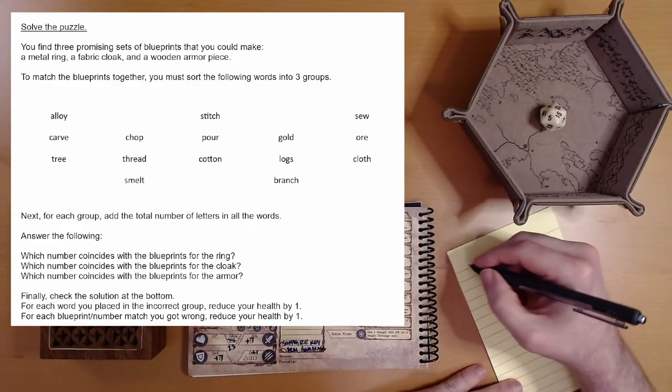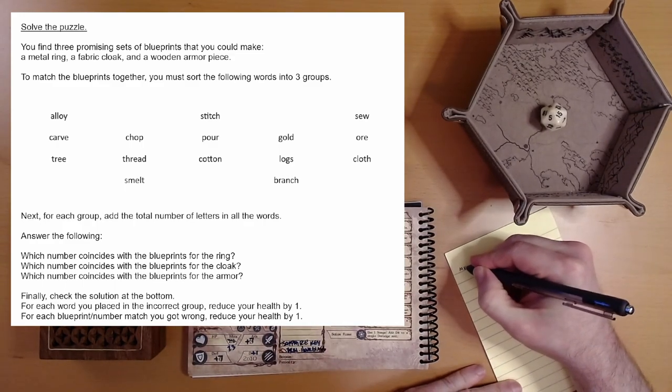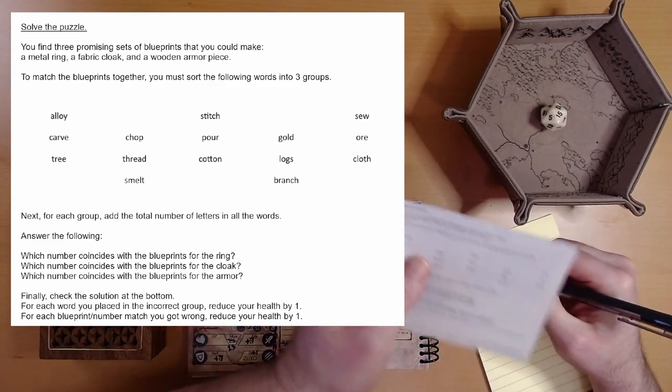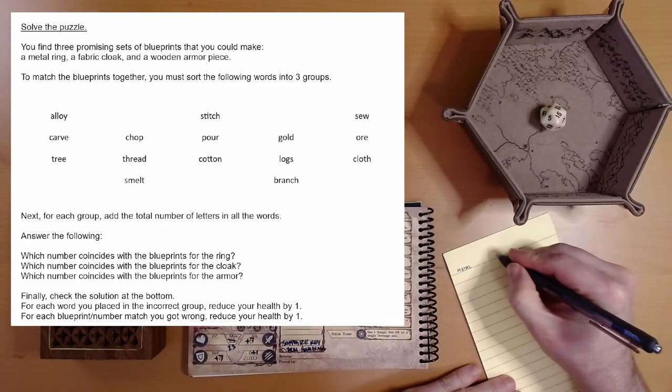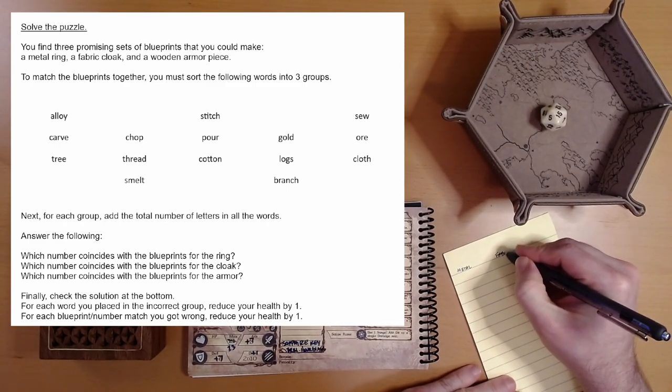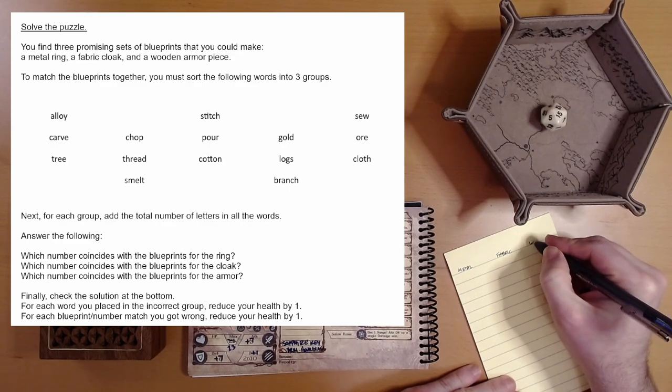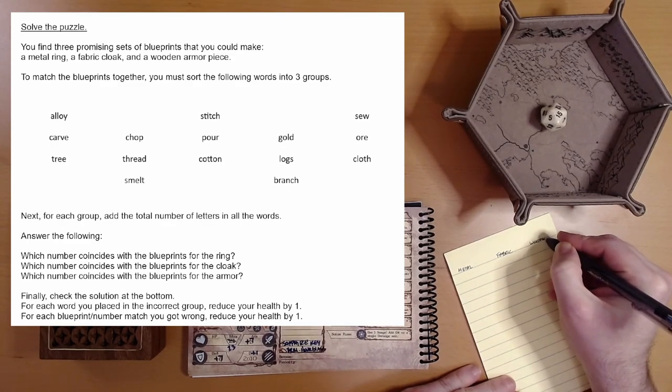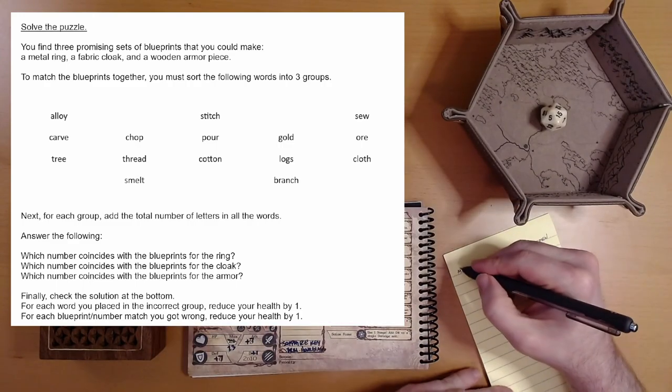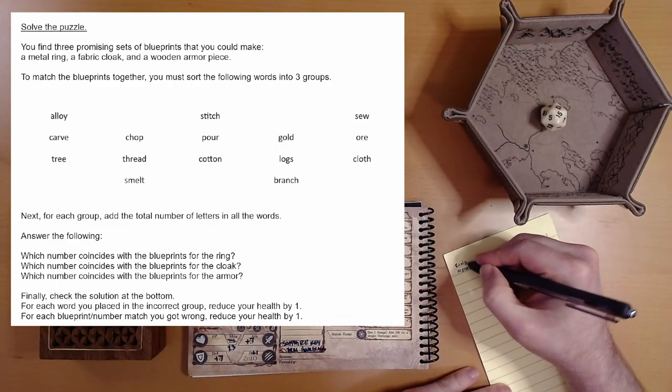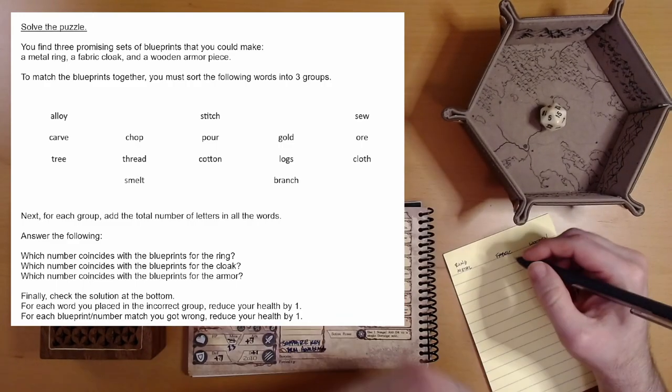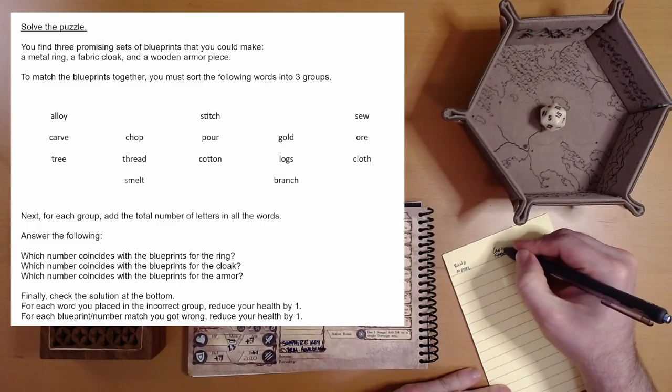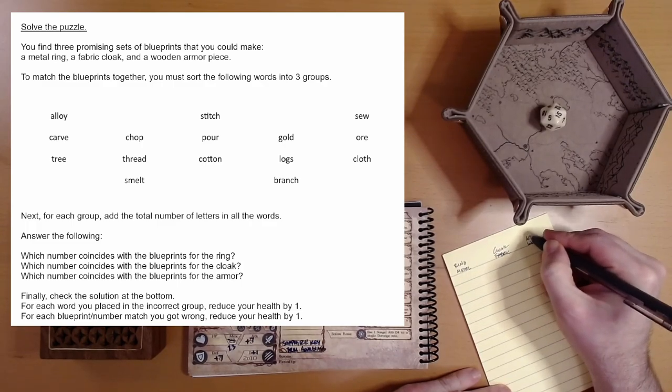These look like they all have to do with the material. Let's try that. We'll go with metal in this column, fabric, and wood. That's the ring, fabric cloak, and wooden armor piece.